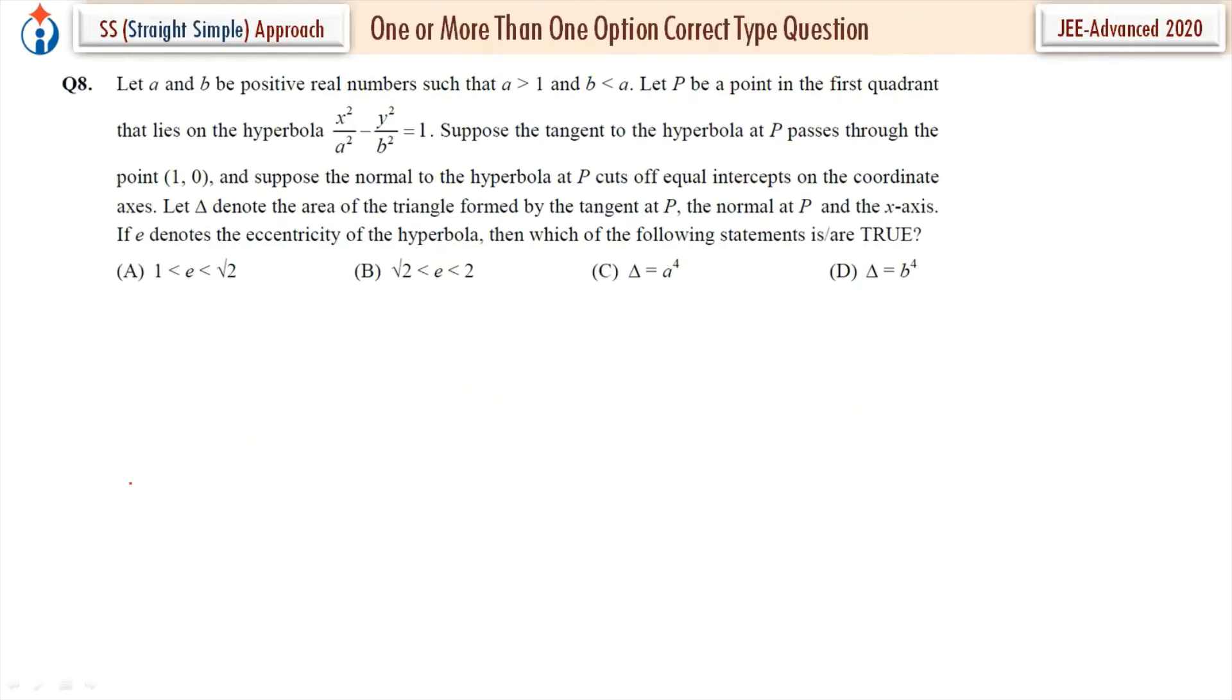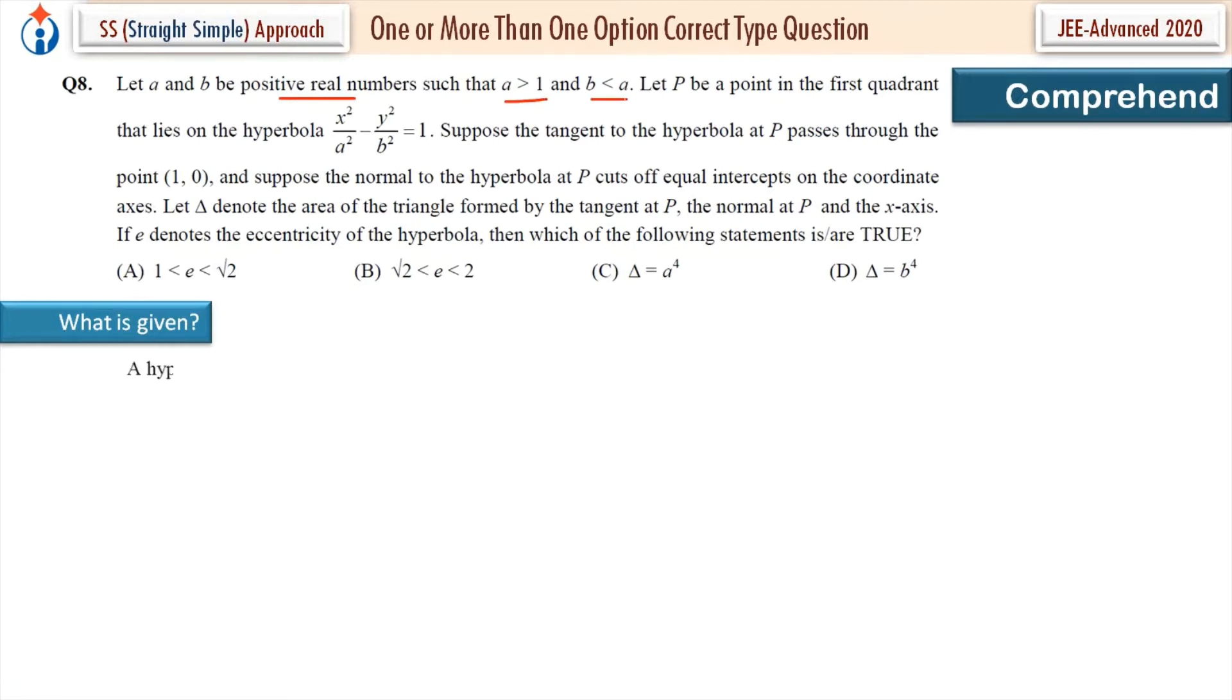Question number 8. Let's comprehend what is given. Let A and B be positive real numbers such that A greater than 1 and B less than A. Let P be a point in the first quadrant that lies on the hyperbola. So a hyperbola equation is given.